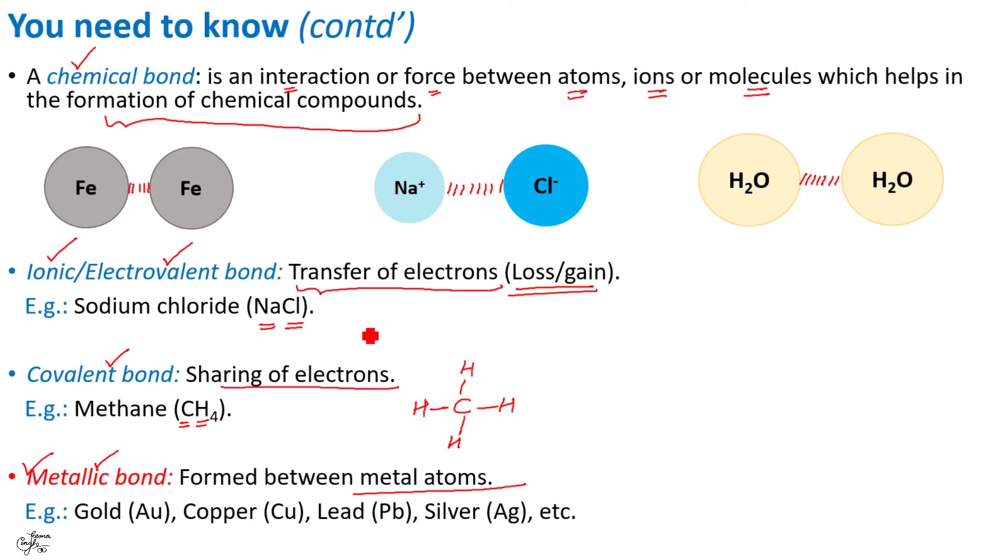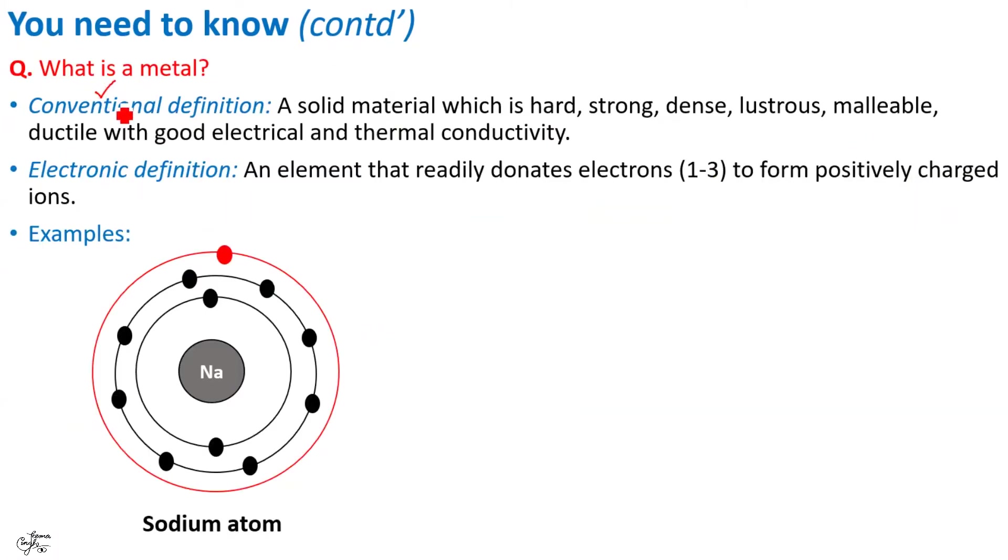To understand metallic bonding, let us also recall the conventional or traditional definition of metals. We tend to define metals on the basis of its physical or bulk properties. We say, a metal is a solid material which is typically hard, strong, lustrous, malleable, ductile, has good electrical and thermal conductivities. Defining metals in terms of electrons, we say, a metal is an element that readily donates electrons to form positively charged ions. A metal donates 1 to 3 electrons so as to attain a stable octet configuration.